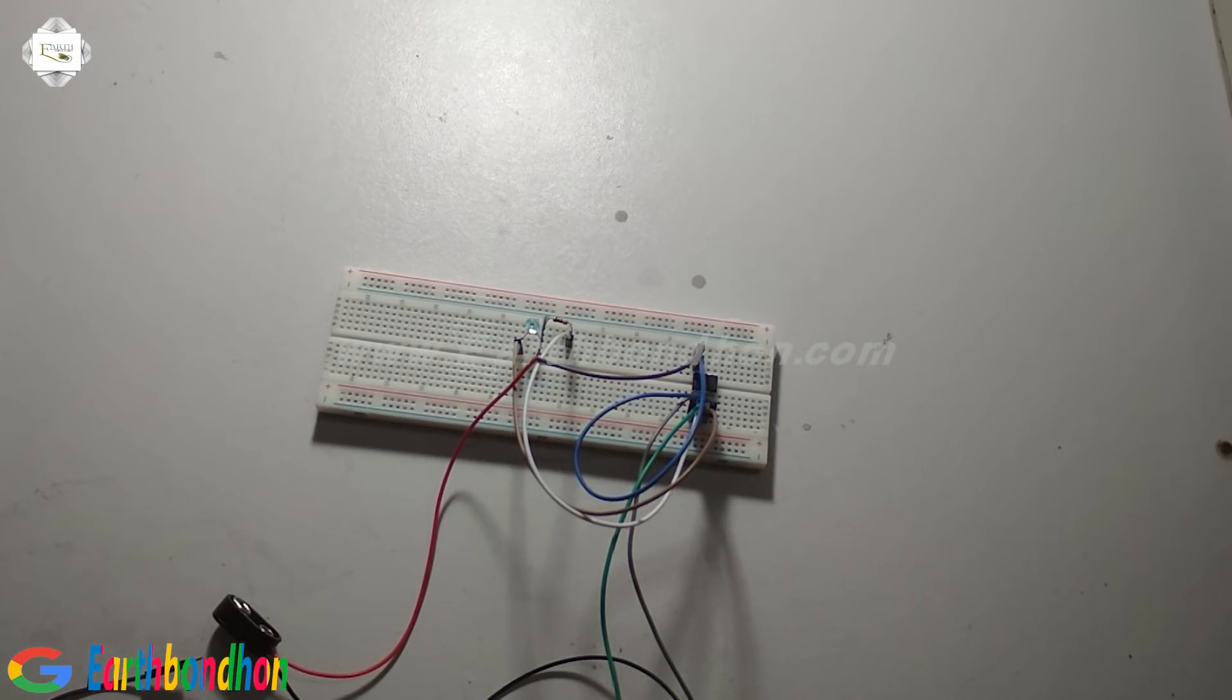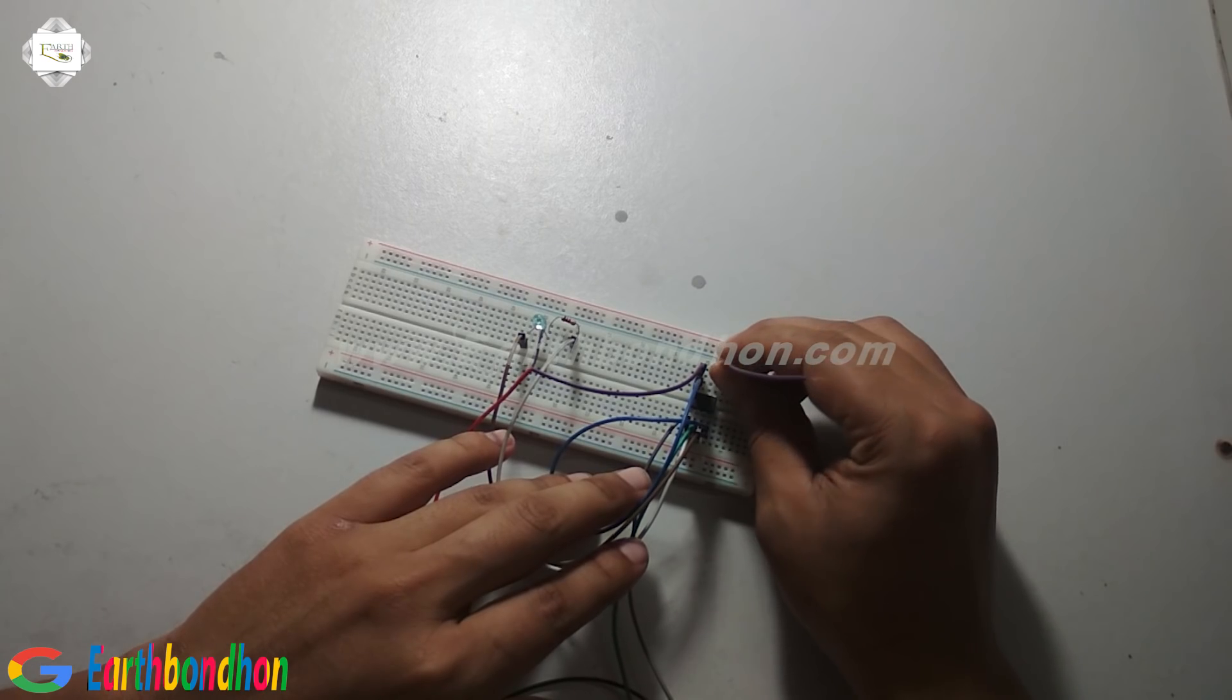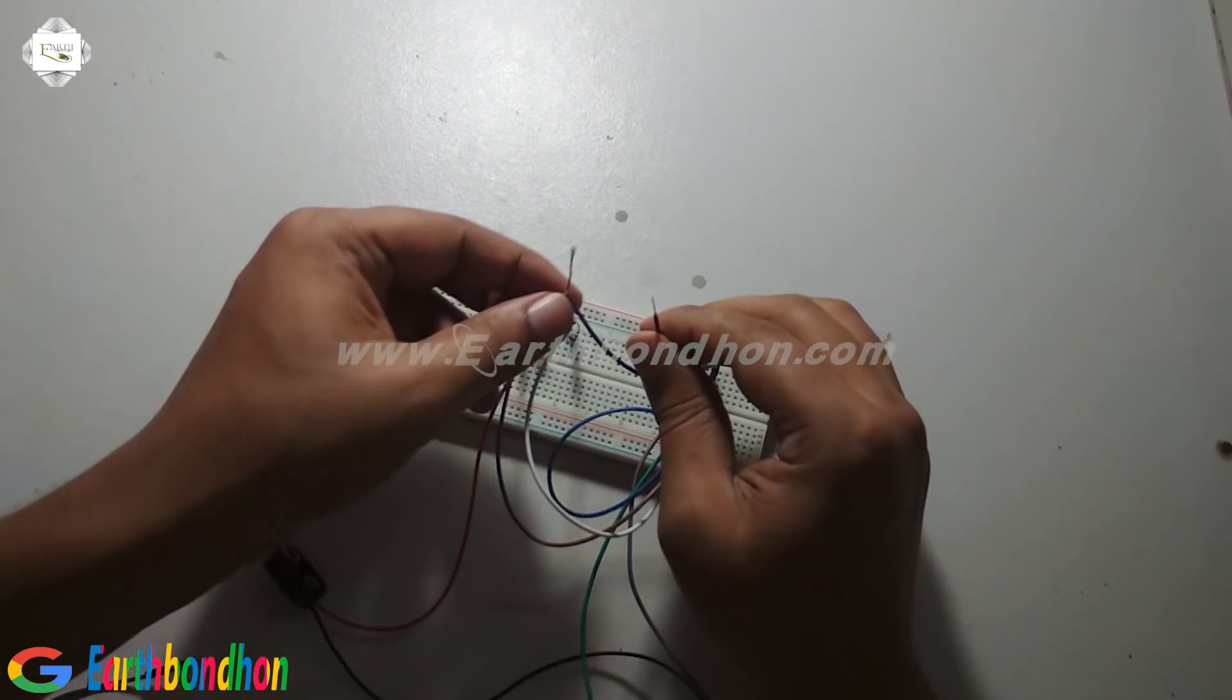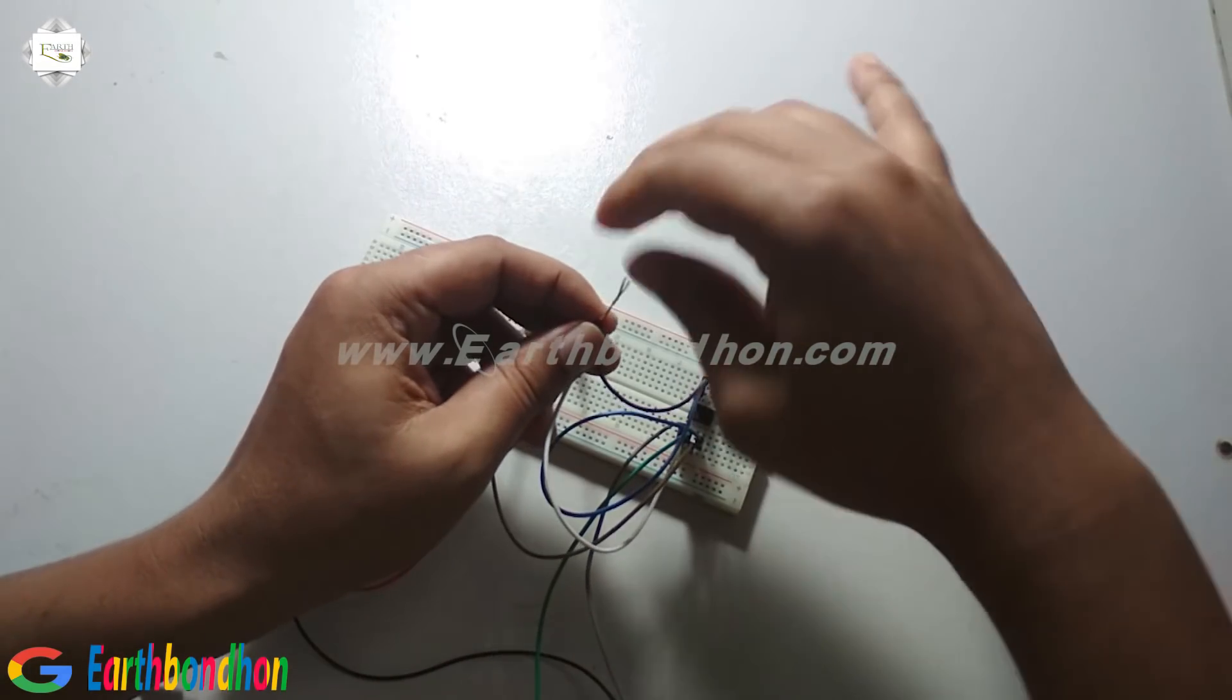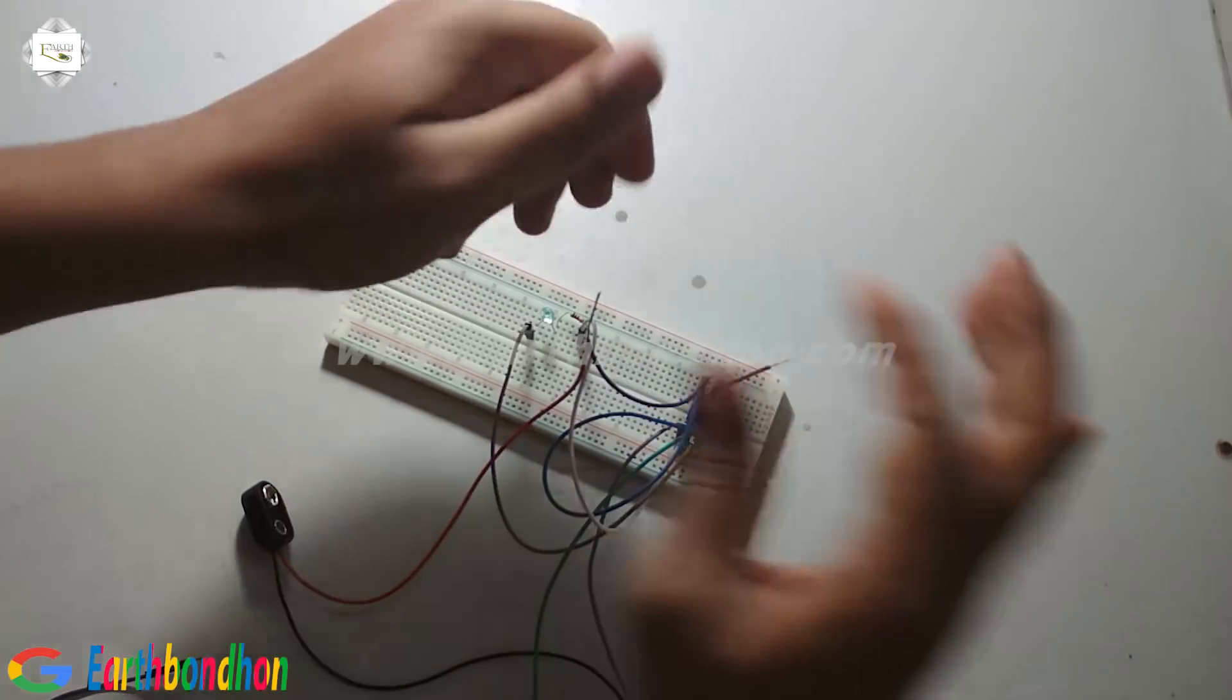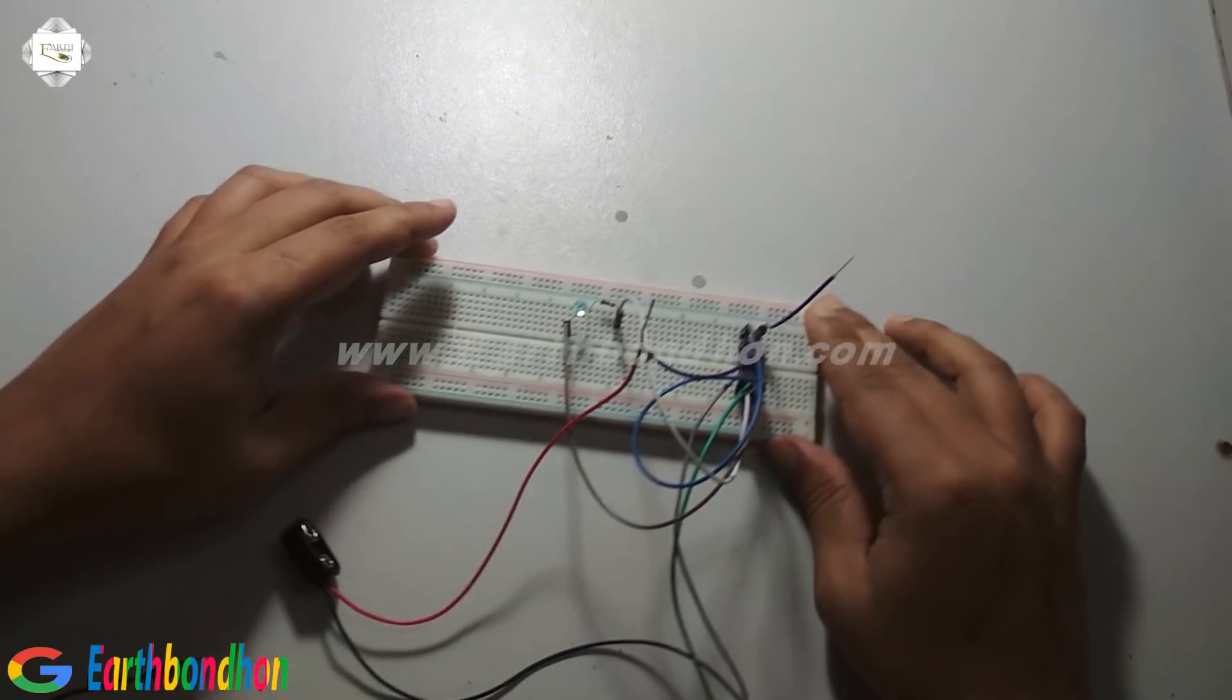And pin number 6 is another touch switch. Pin 6 is touch 2 for off. This terminal touch turns the LED off, and this terminal is on.